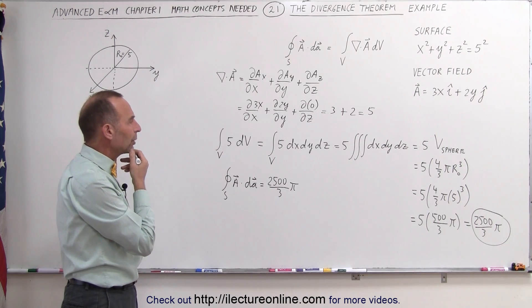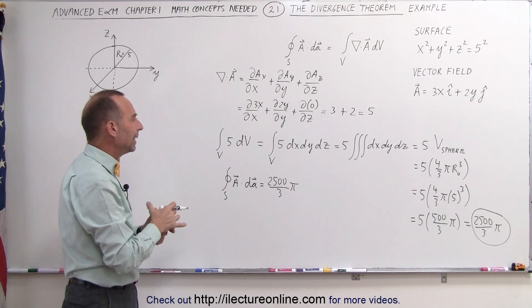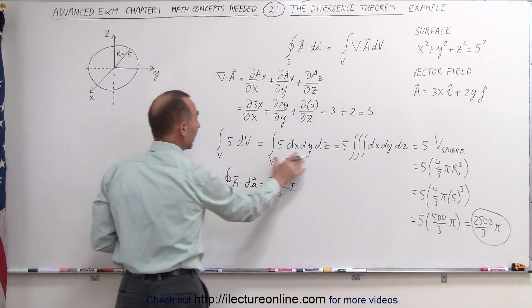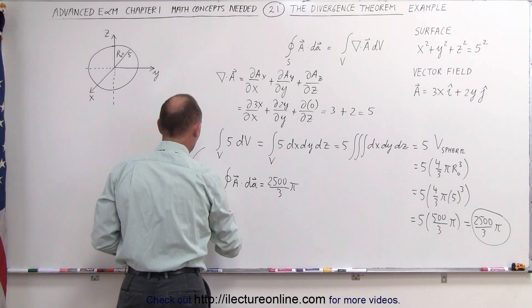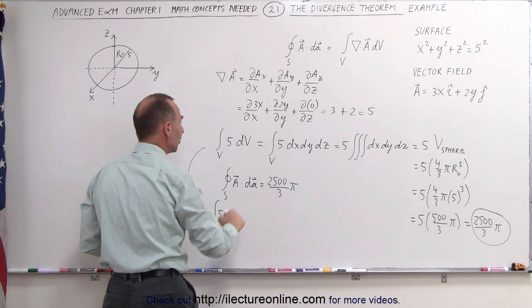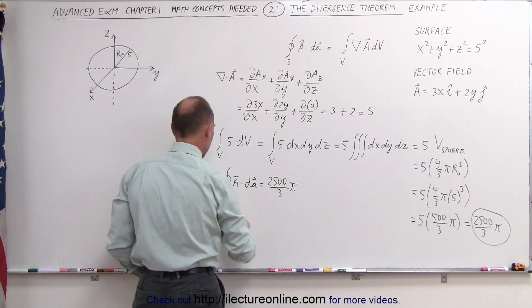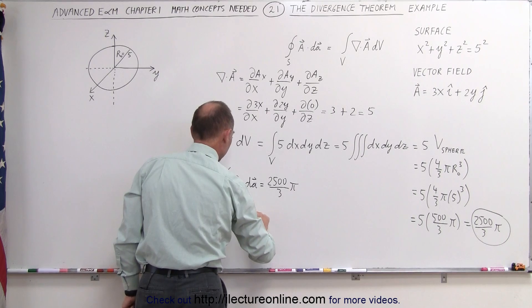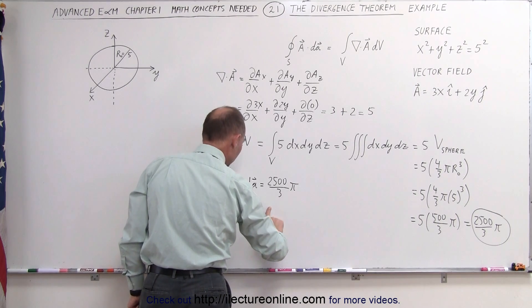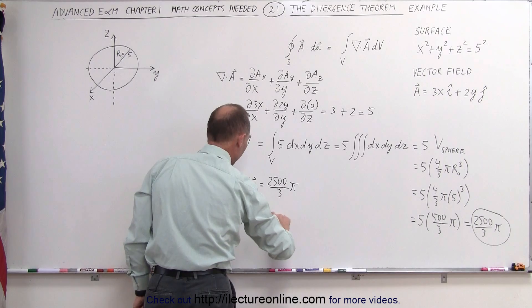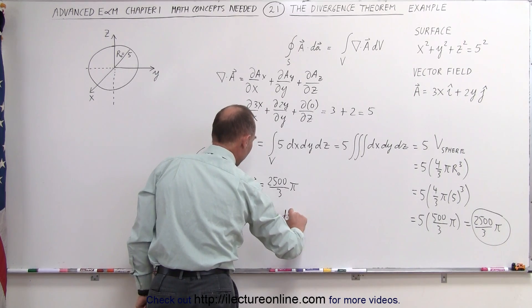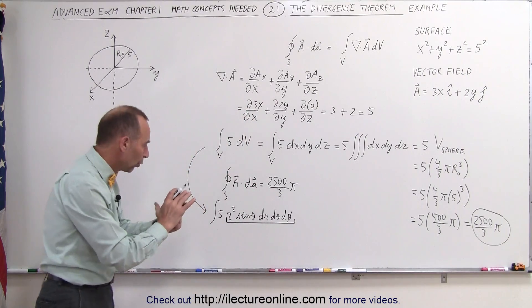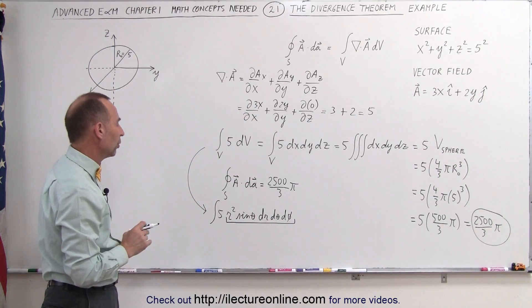Another thing that we could have done is said, well, we could have also integrated this in the spherical coordinate system. And so instead of writing this like this, we could have said, well, we can do the integral of 5 times the volume integral would be equal to r squared times the sine of theta times d theta, dr, I should go with r first, dr, d theta, d phi. So here we have this here is the volume, or the small volume segment in spherical coordinates.